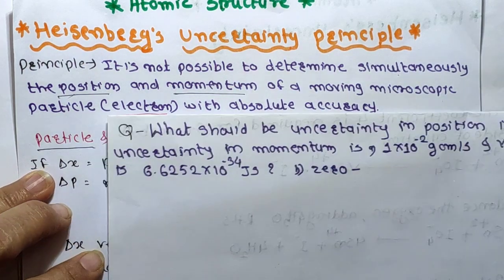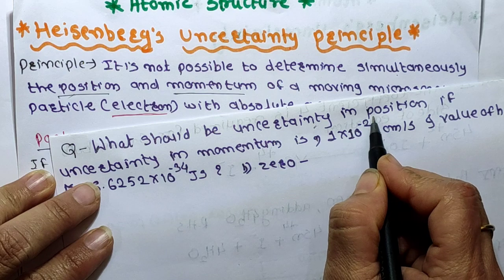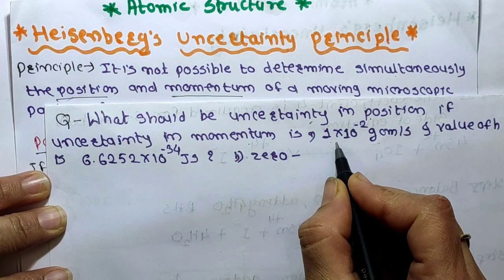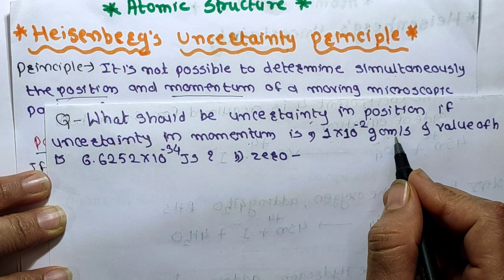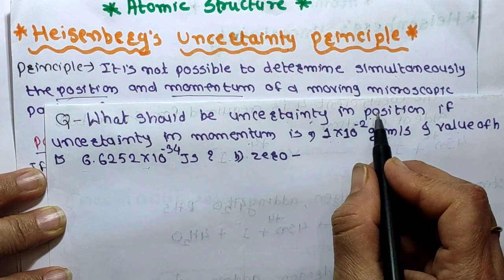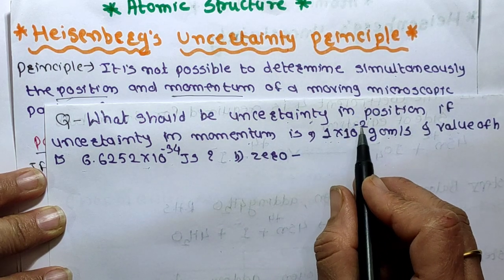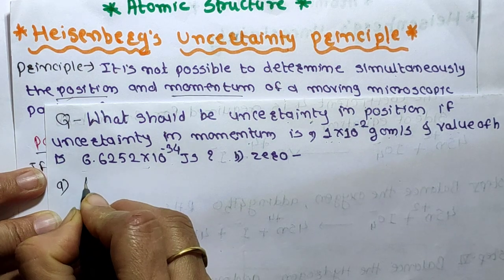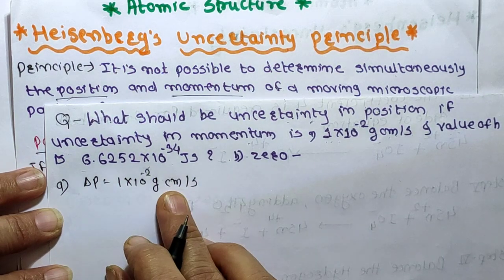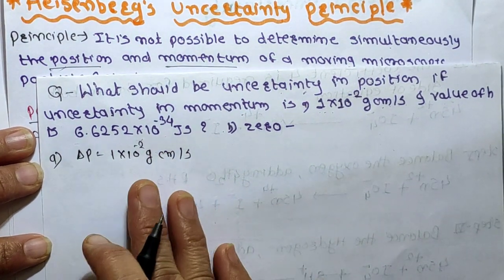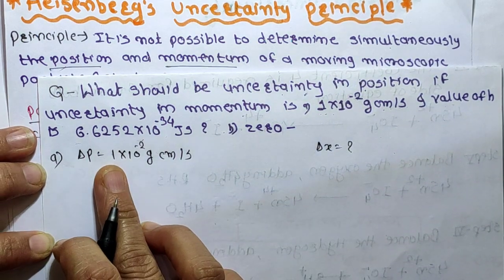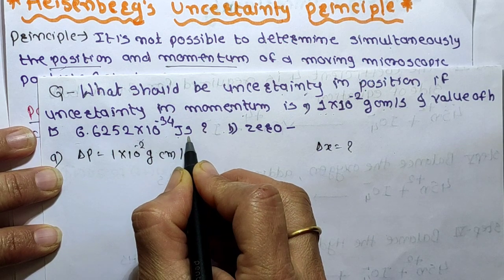Let's take the first question: What should be the uncertainty in position? That is, find delta x. The uncertainty in momentum delta p is given as 1 into 10 raise to minus 2 gram centimeter per second. The value of Planck's constant h is also given. We need to find the uncertainty in position when momentum is 1 into 10 raise to minus 2, and also when momentum is 0. So delta p equals 1 into 10 raise to minus 2 gram centimeter per second. h is given in joule second.